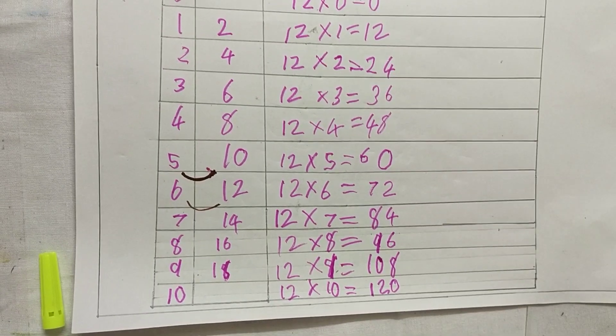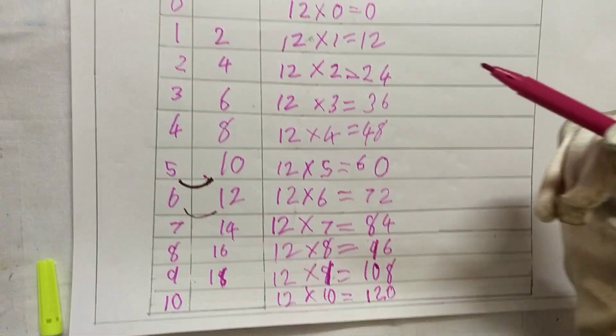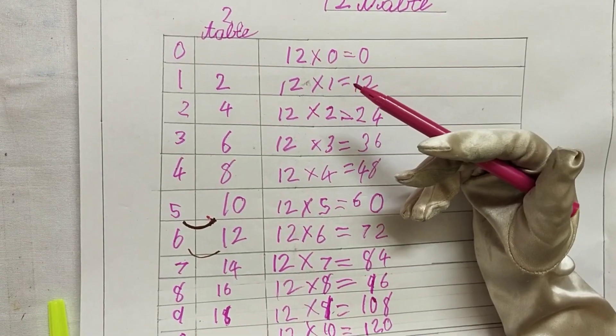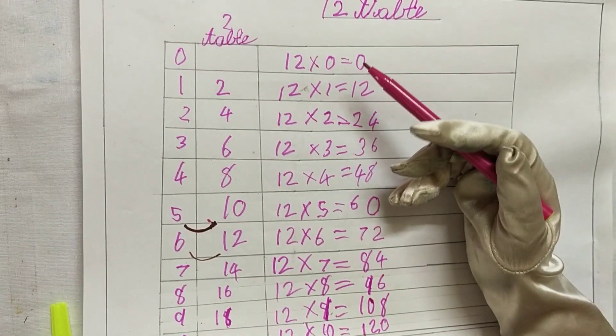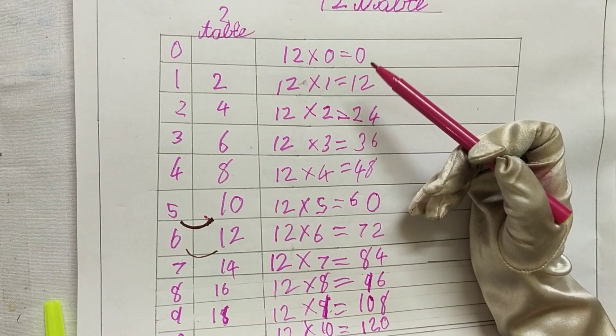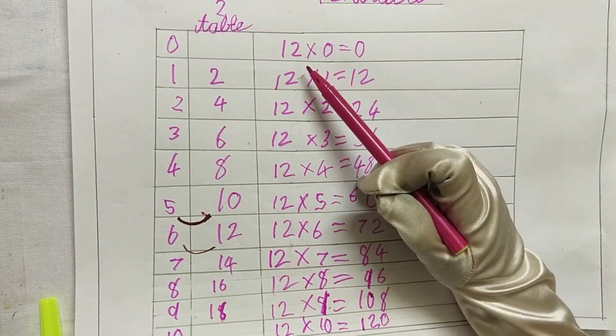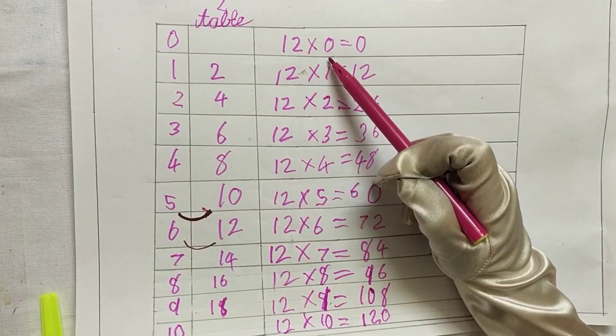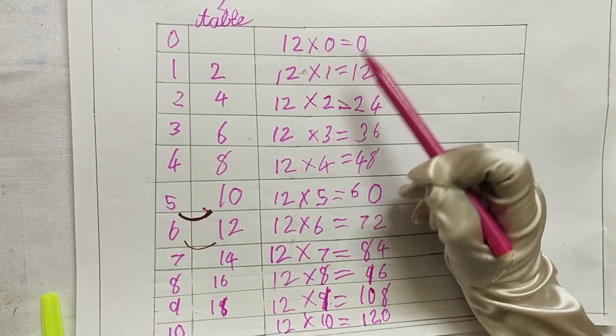Now let's revise the 12 tables again. 12 into 0 is 0.